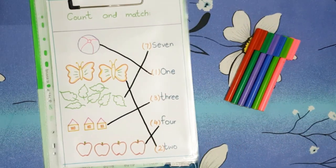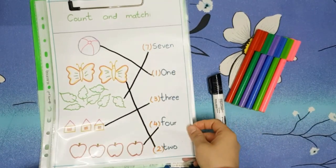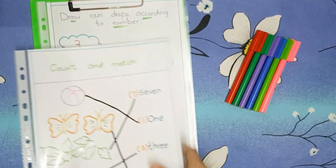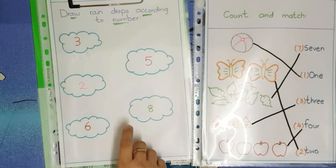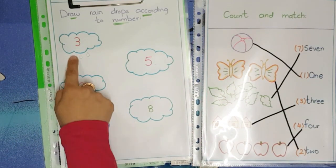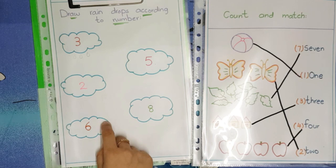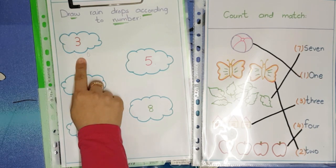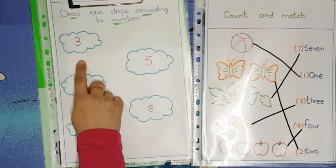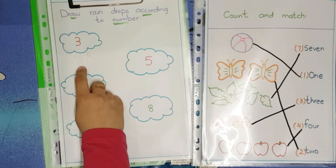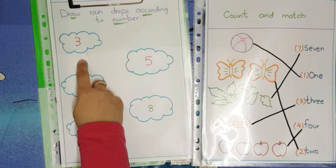Our first worksheet has been completed. Now we will move to our second worksheet. In this worksheet I have made a few clouds with a number in each one. Ask the student to draw raindrops according to the number under each cloud. For example, on the first cloud we have number three, so ask the child to draw three drops under the cloud: one, two, three, like this.